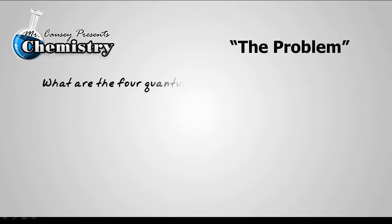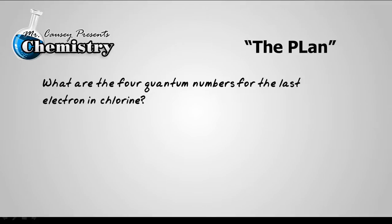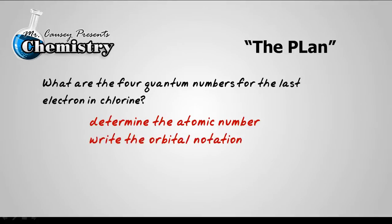The problem: what are the four quantum numbers for the last electron in chlorine? I want to make a plan. So let's determine the atomic number, write the orbital notation, find the last electron in that orbital notation, and then write the four quantum numbers.